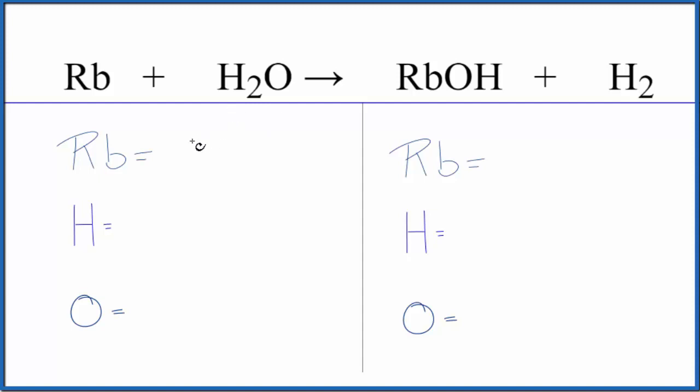Let's count the atoms up, balance the equation. One rubidium atom, two hydrogens, and one oxygen.